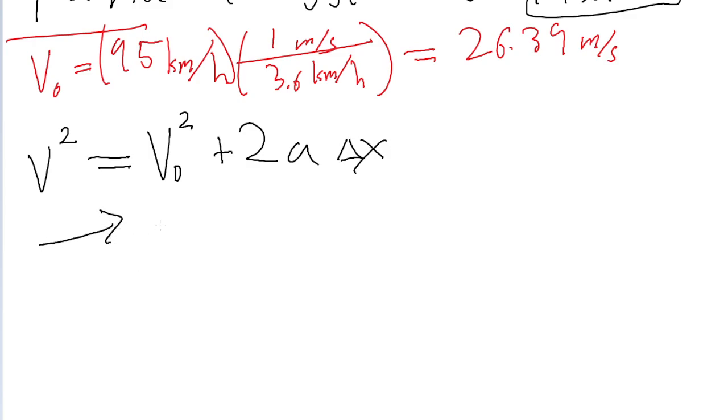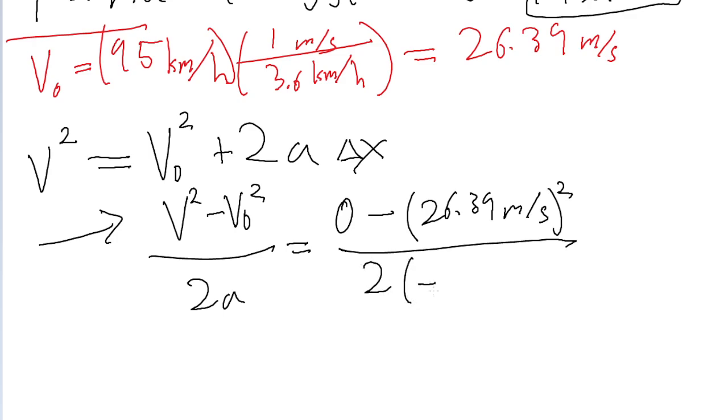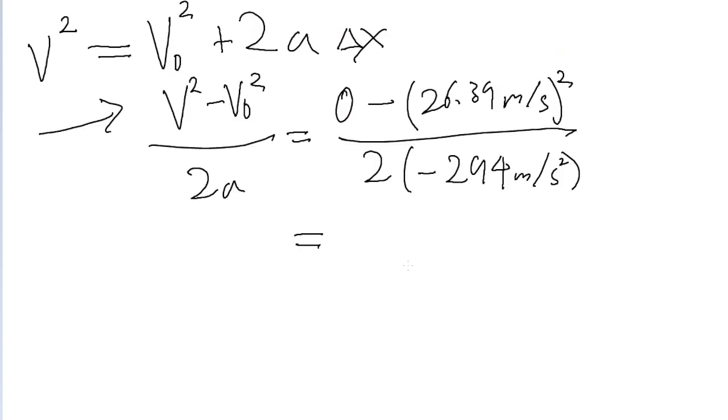So, let's solve this equation for delta x by subtracting from both sides of the equation v naught squared, and then divide both sides of the equation by 2 times the acceleration. And all we've got to do is just plug in our values. So, 0 is the final speed, minus the square of the initial speed, that's 26.39 meters per second, all divided by 2 times the acceleration. And it's a negative acceleration because we're slowing it down, negative 294, because it's a deceleration, meters per second squared. And if we put that into a calculator, then we find a distance of about 1.2 meters.